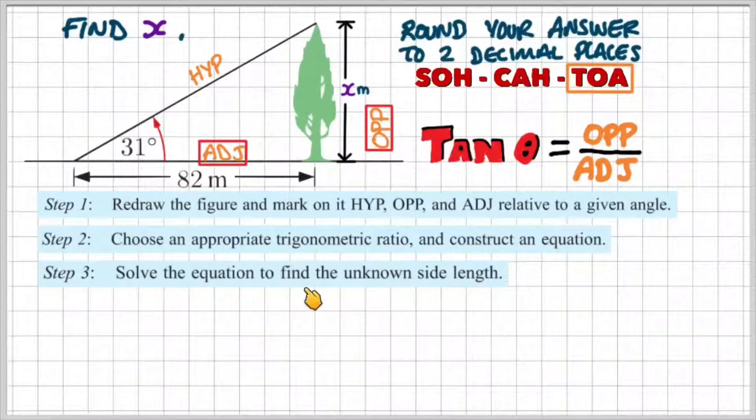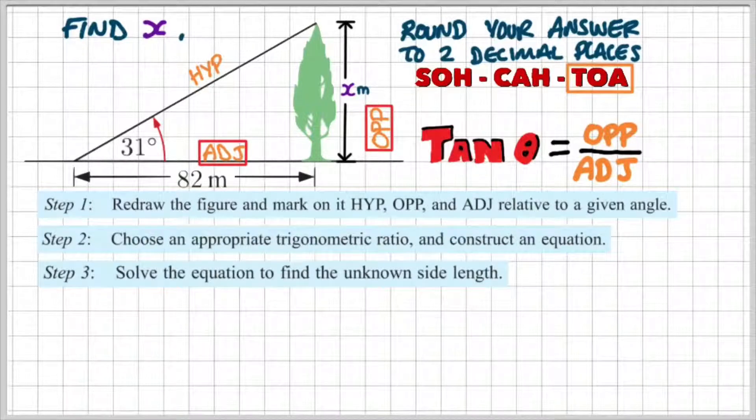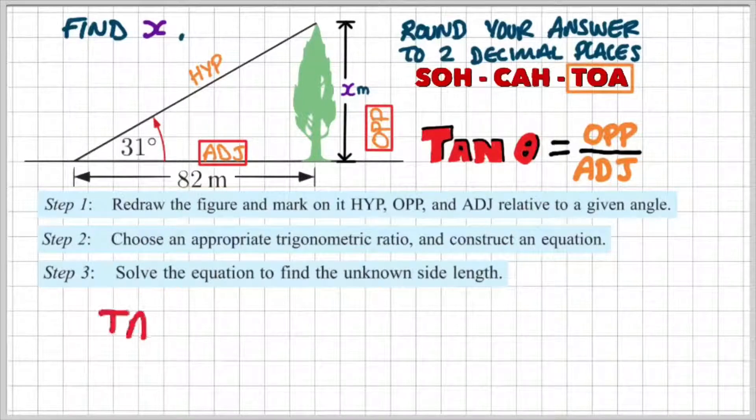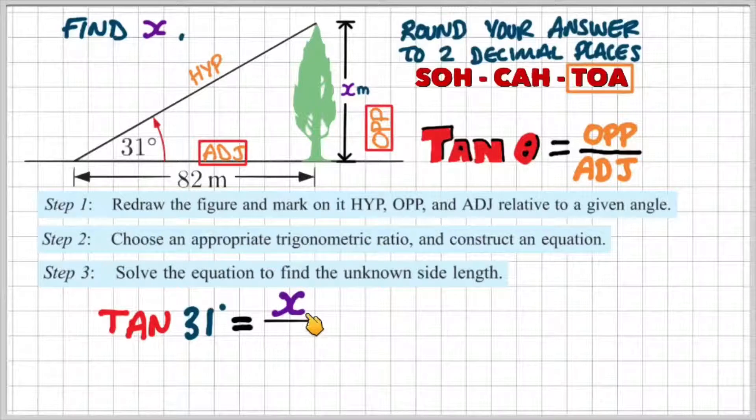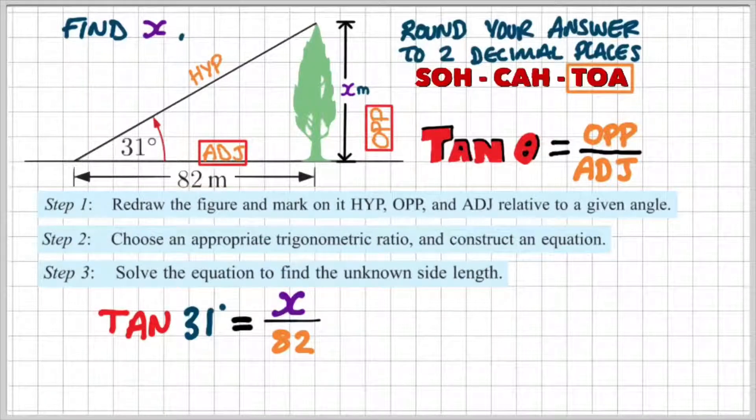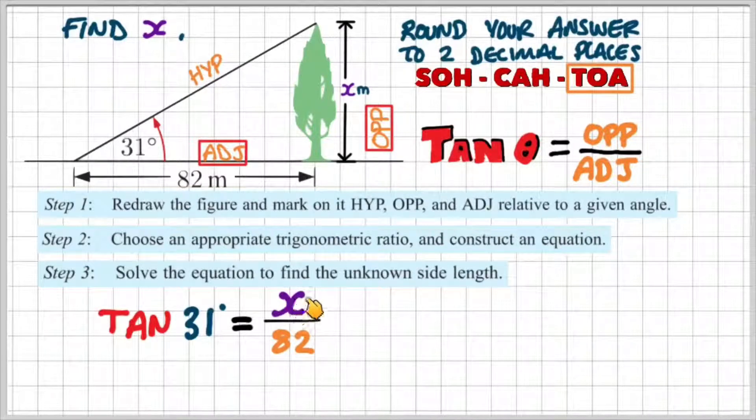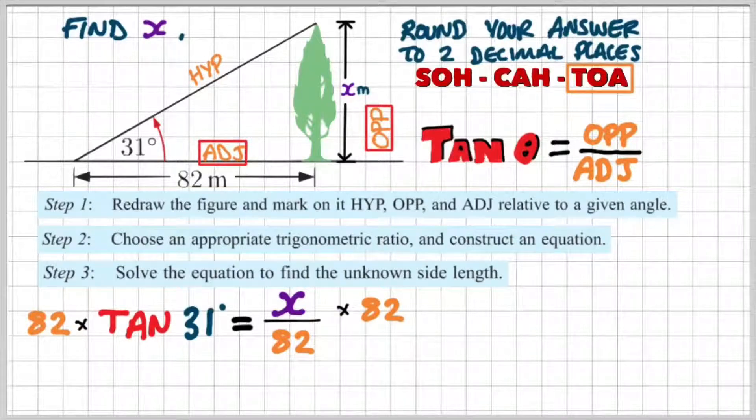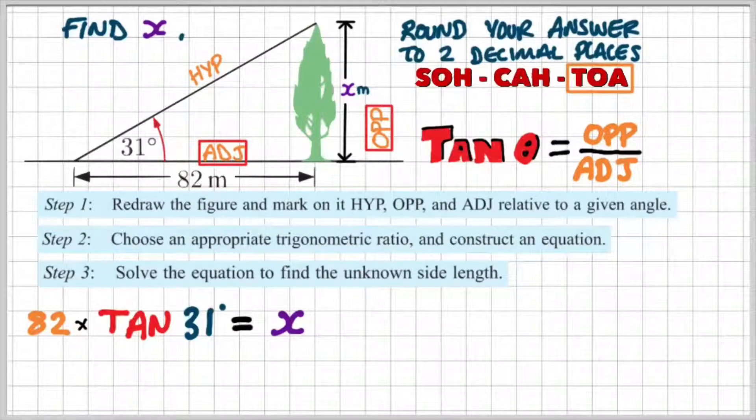Step three, we're going to solve the equation to find the unknown side length. Tan 31 equals the opposite divided by the adjacent. I need to get the X on its own, so I'm going to multiply both sides by 82. That allows me to cancel out the 82 on the right-hand side, leaving me with 82 times tan 31 equals X.